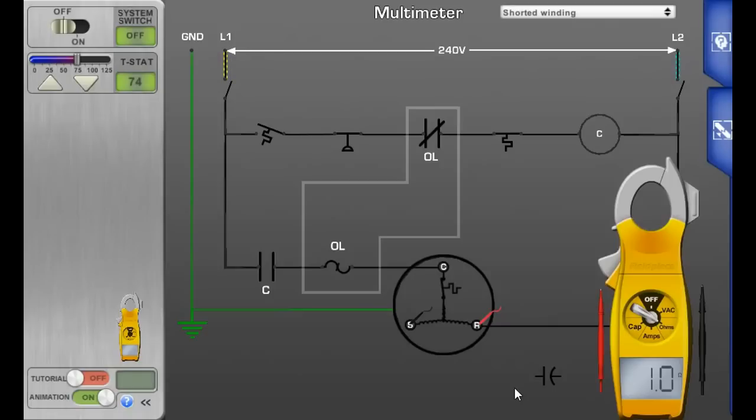So this is what a compressor looks like with shorted, internally shorted windings of the motor. It's going to be measuring very low resistance. They're not going to add up properly from common to start, common to run, and start to run. You could have some different readings in this, but they're going to all be off and they're going to all be very, very low.